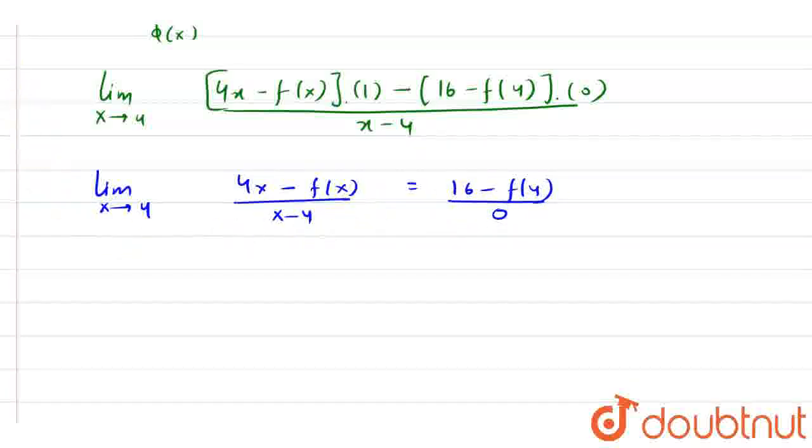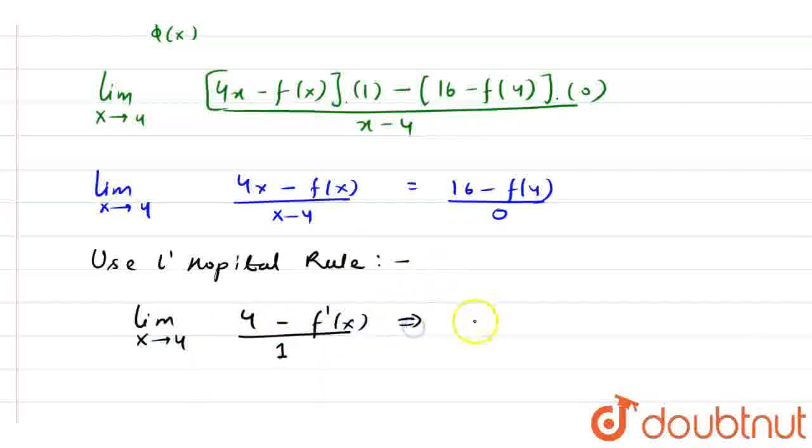I am going to use L'Hopital's rule. L'Hopital's rule suggests that if I differentiate it, we have 4 minus f'(x) divided by 1. Now if I put the value of 4 here, then we have 4 minus f'(4), and this is my final answer.